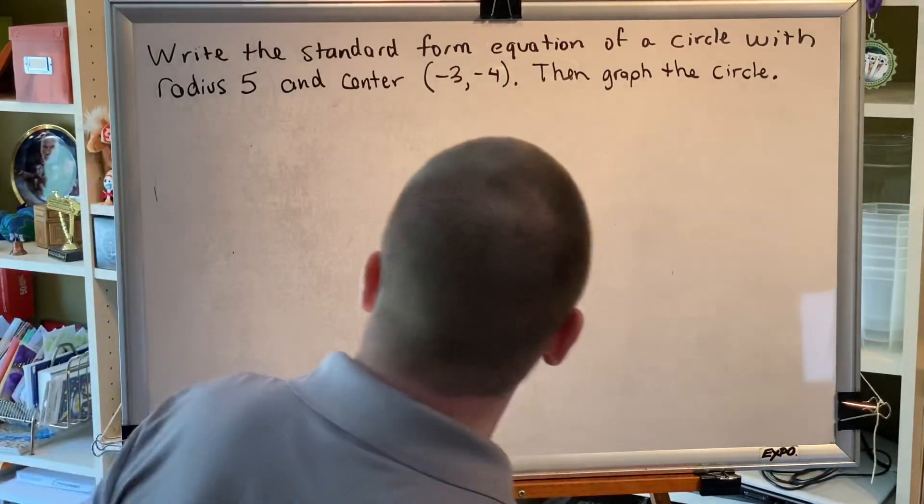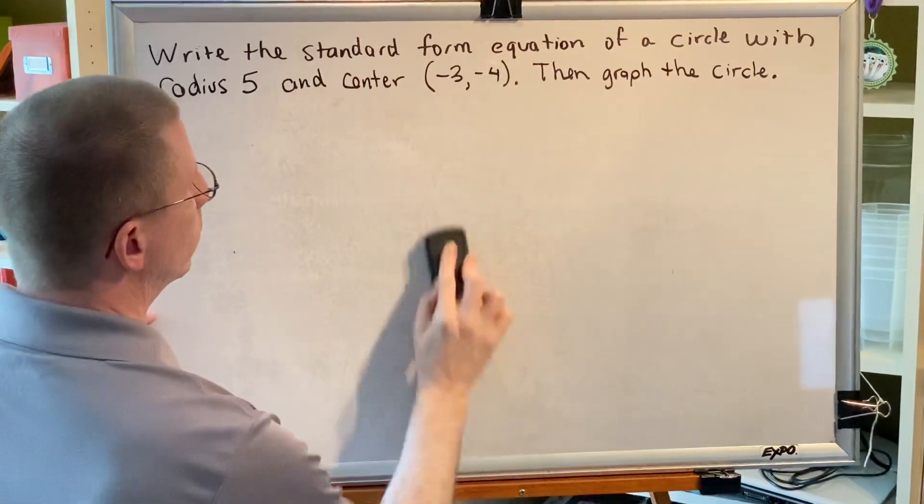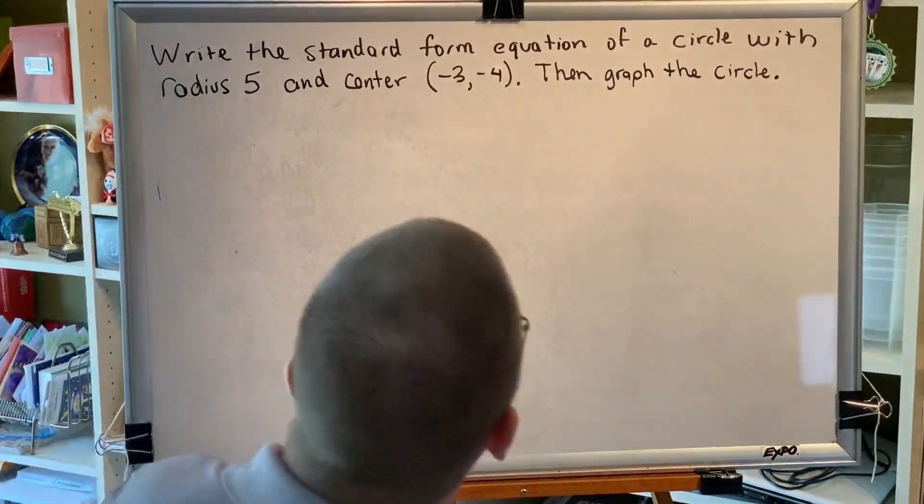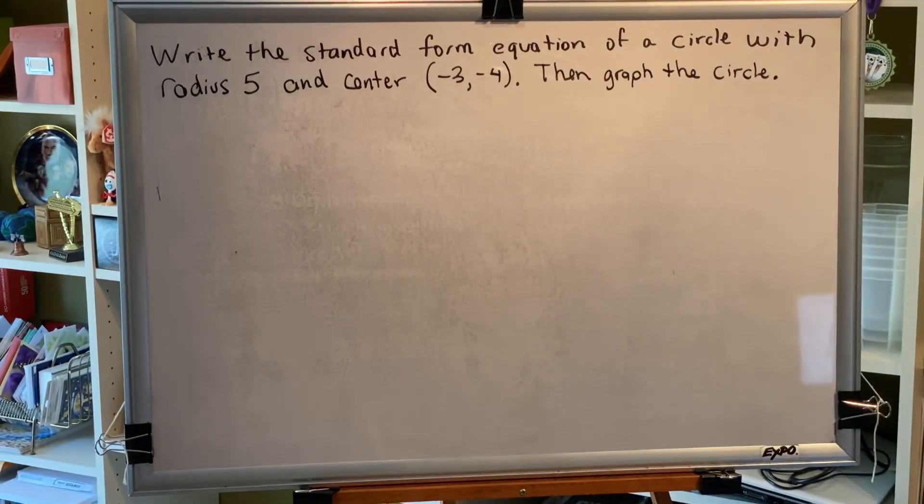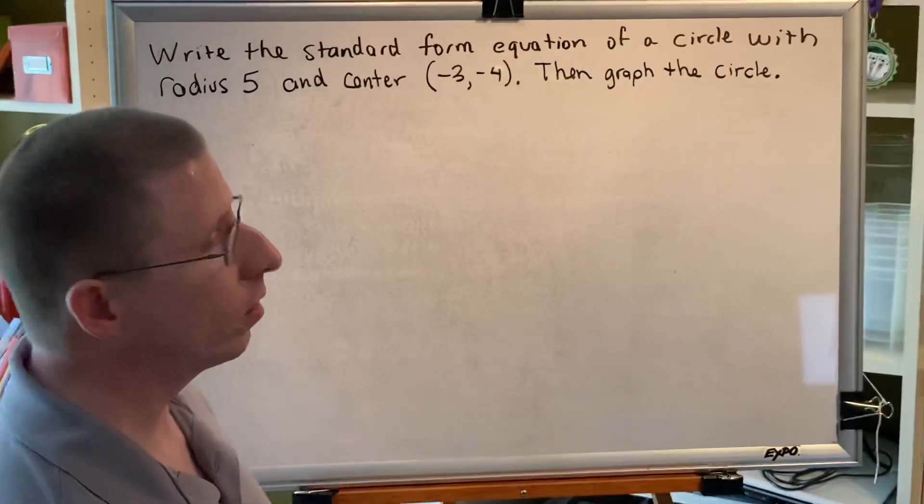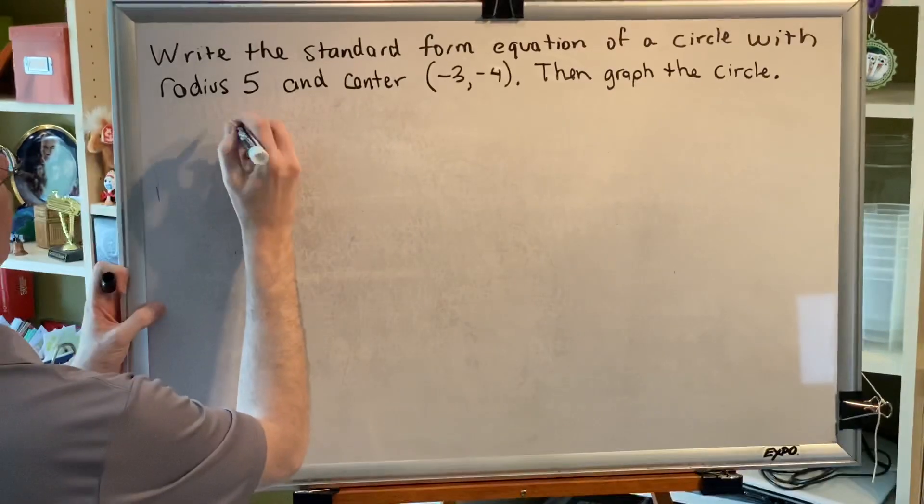Okay, let's apply this to a mathematical problem. Write the standard form equation of a circle with radius five and center (-3, -4). Okay, great. So first we need to come up with the equation of the circle in standard form.